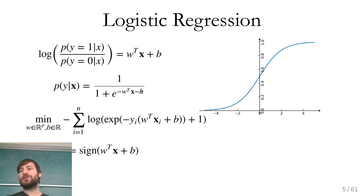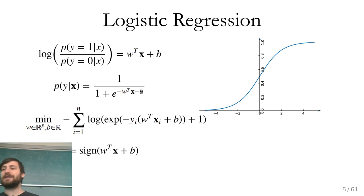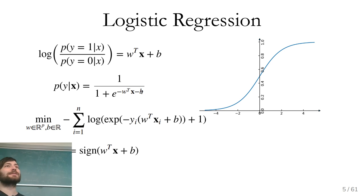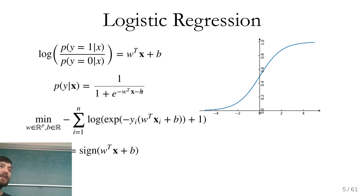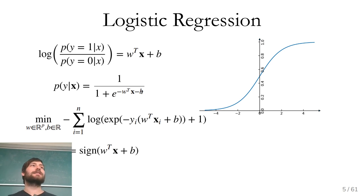Now we're trying to model the probability of Y being zero or one, instead of predicting Y directly. The loss we get from this — we try to maximize the probability of what we observed during training, called maximum likelihood. We write down the probability of the label we observed given X, and we want this probability for the data we actually observed to be maximum. We want the model to give maximum probability to the things we actually saw.